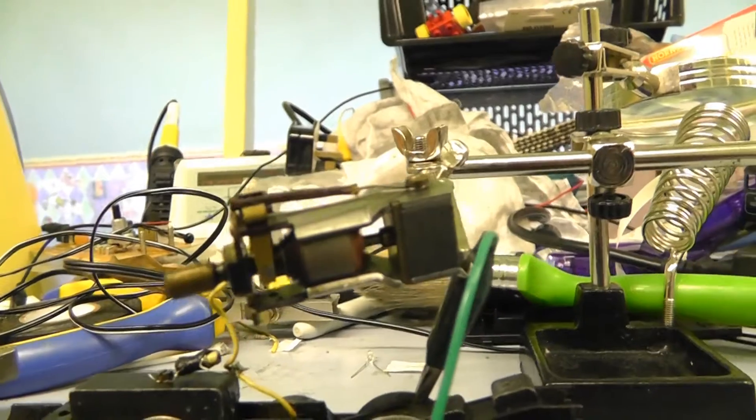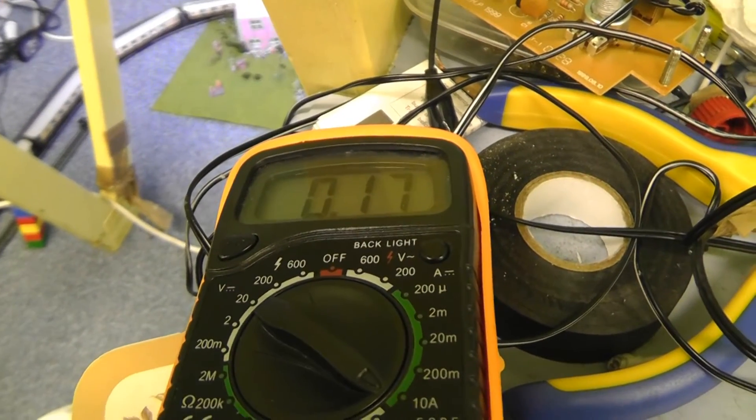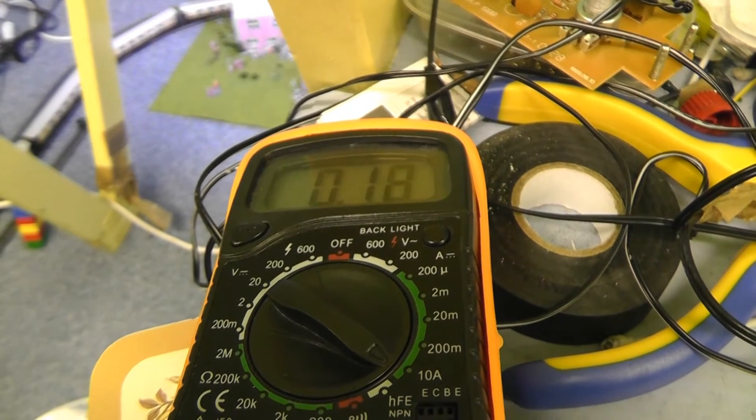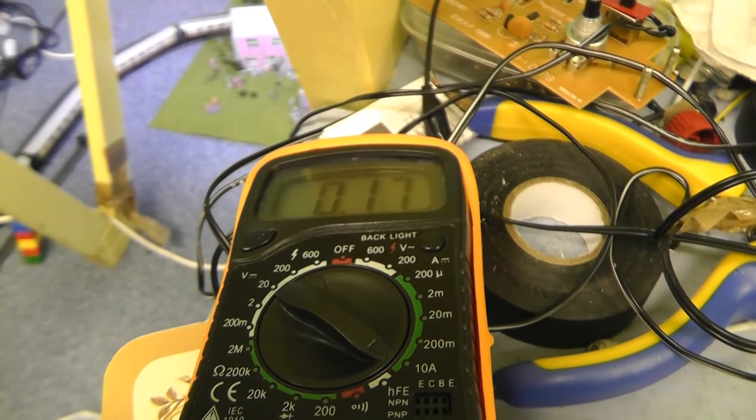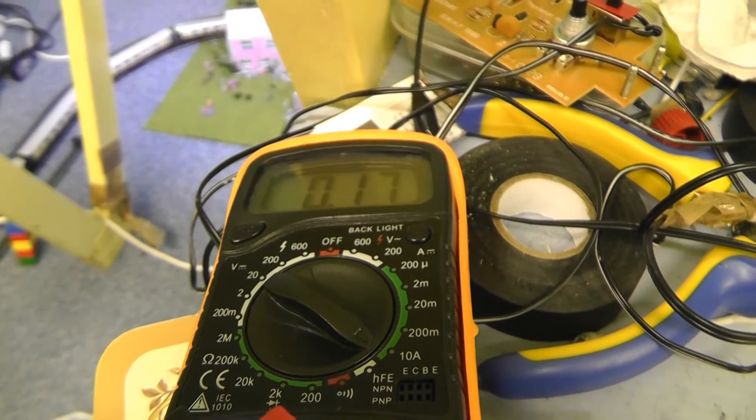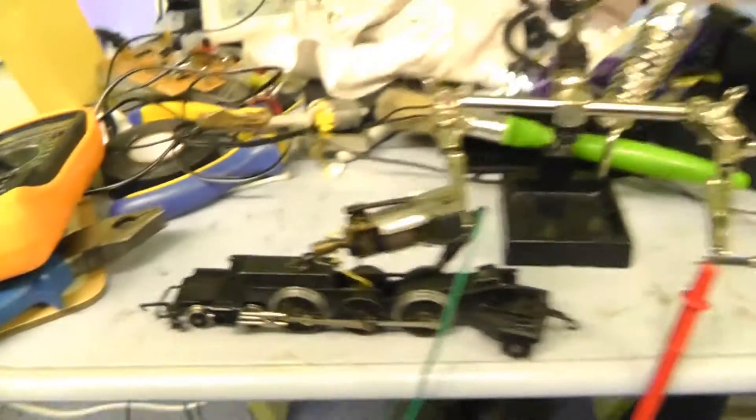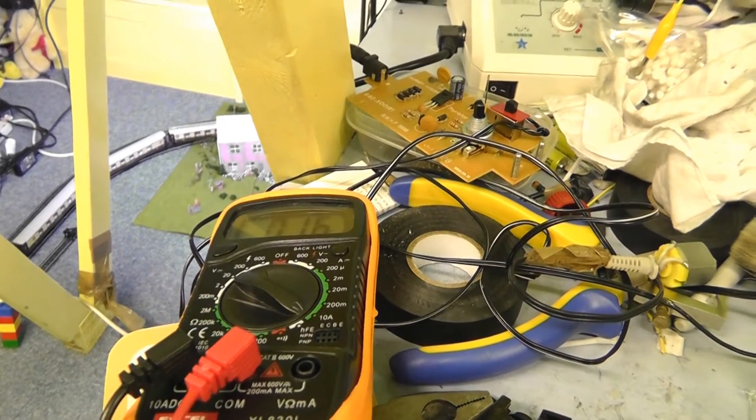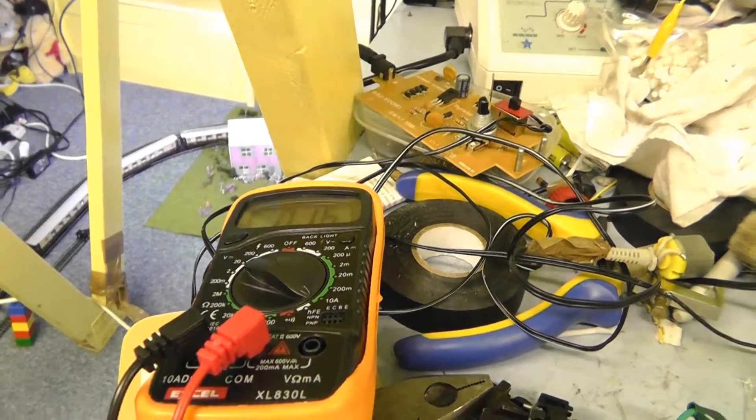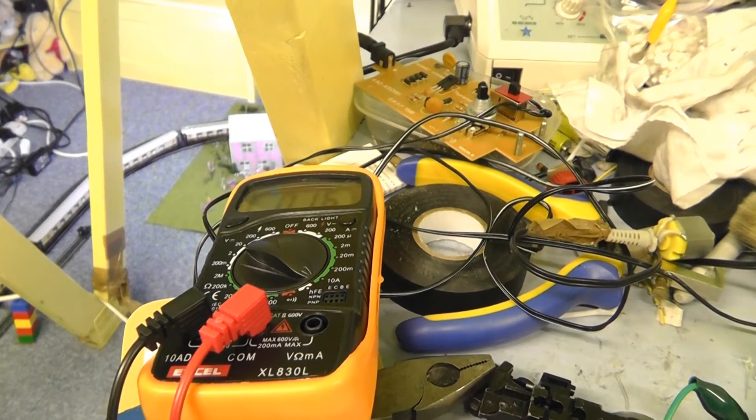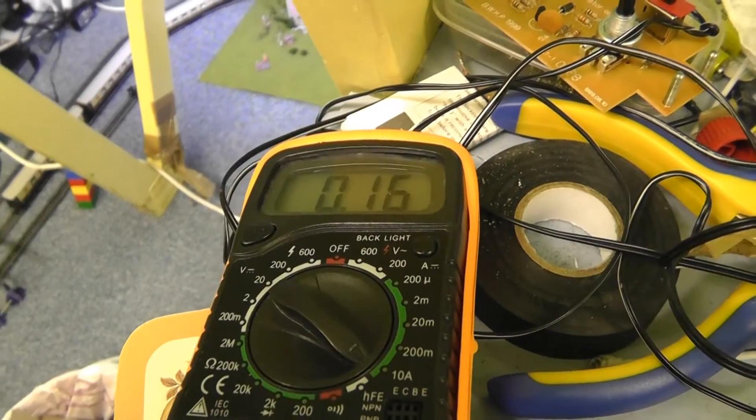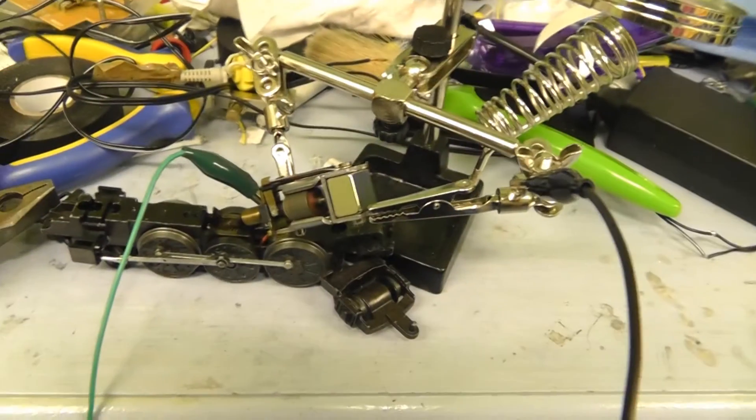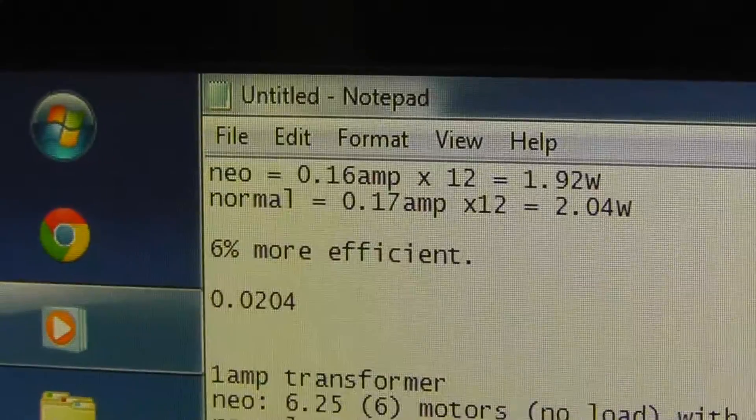Here's the non-neo magnet. And it's drawing, call it 0.18 amps. 0.17 then. Flickin between, 0.17 amps. There you go. And that's without the neo magnet. Here's the neo magnet. And it's pulling 0.15 amps. 0.16, let's see. Yeah, call it 0.16 then. There we go. There we go.